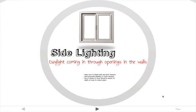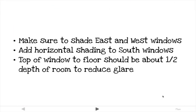Daylighting that comes through openings in the walls or windows is called side lighting. East and west windows must have shading devices to help avoid late afternoon and early morning sun. South-facing windows are the best because they get the most indirect sunlight. Consider also having horizontal shading devices to reduce glare. The height from the top of the window to the floor should be about one-half the depth of the room to reduce glare and maximize daylight.